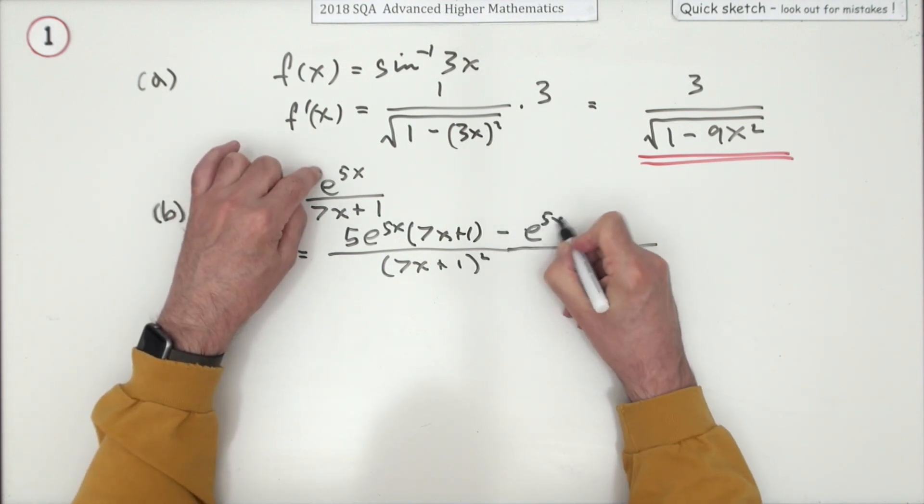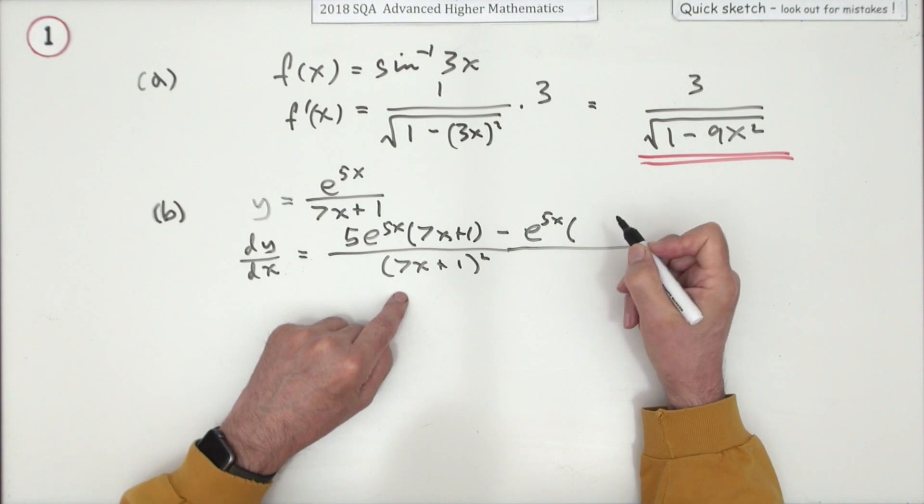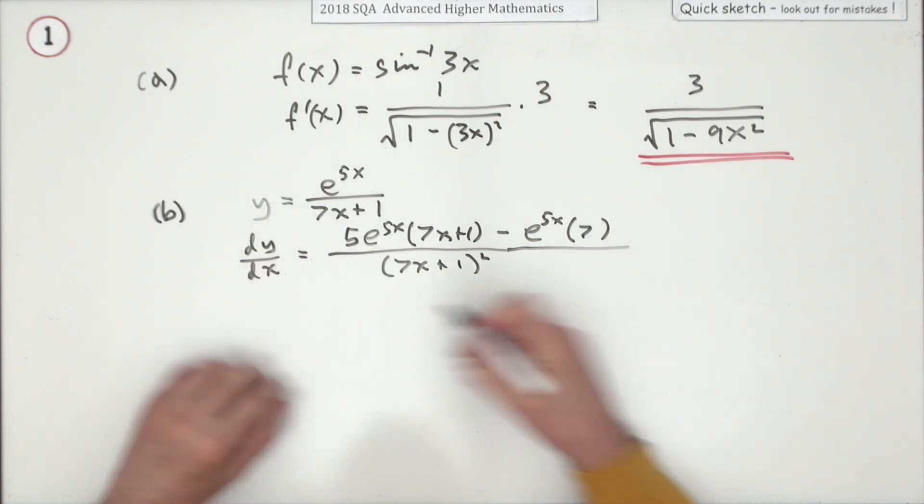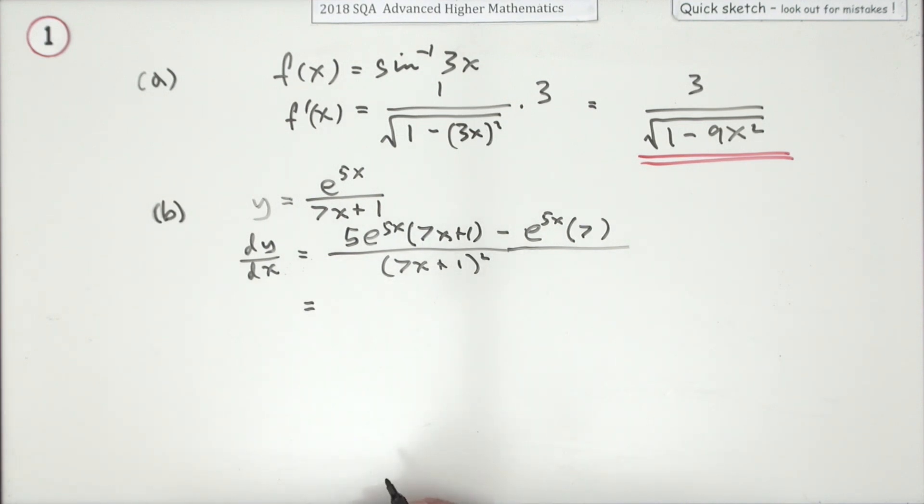Minus, now that one has been done so it just waits. Well this one takes its turn, but the derivative of 7x plus 1 is just 7. So that's the derivative, apart from just tidying it up.